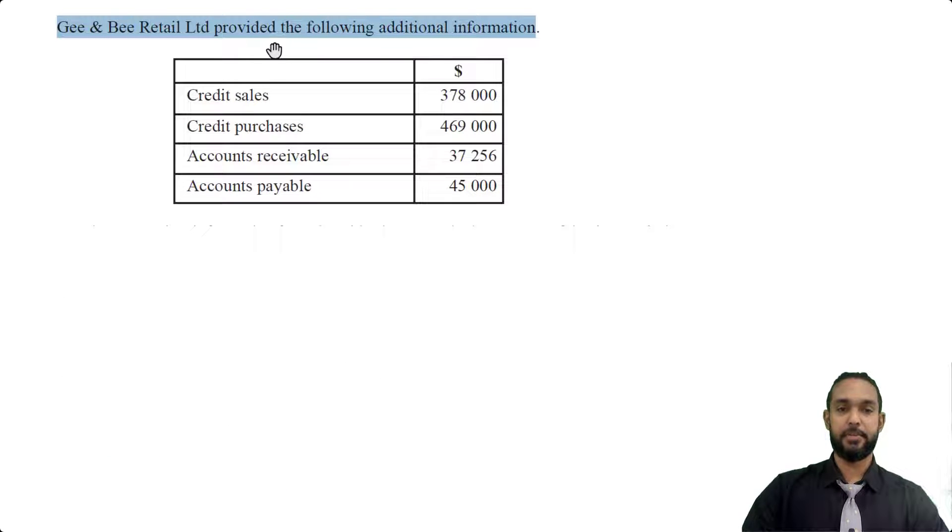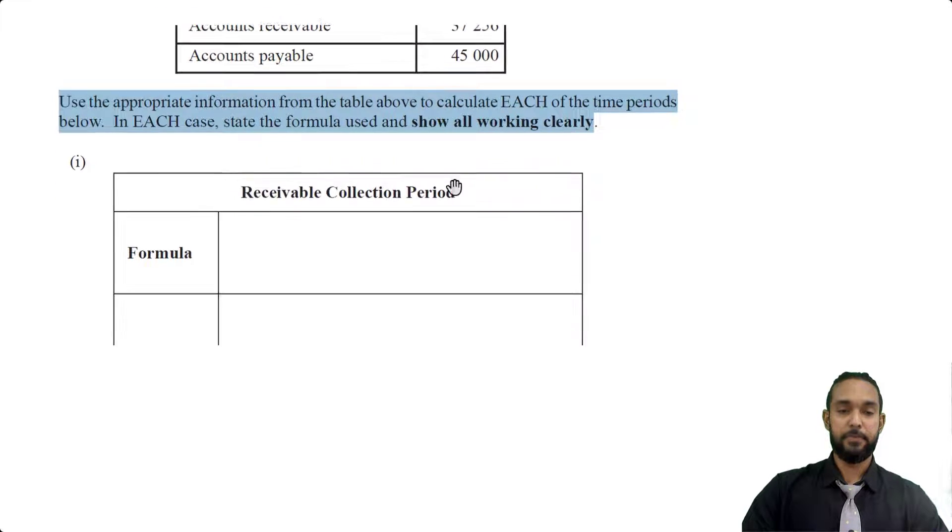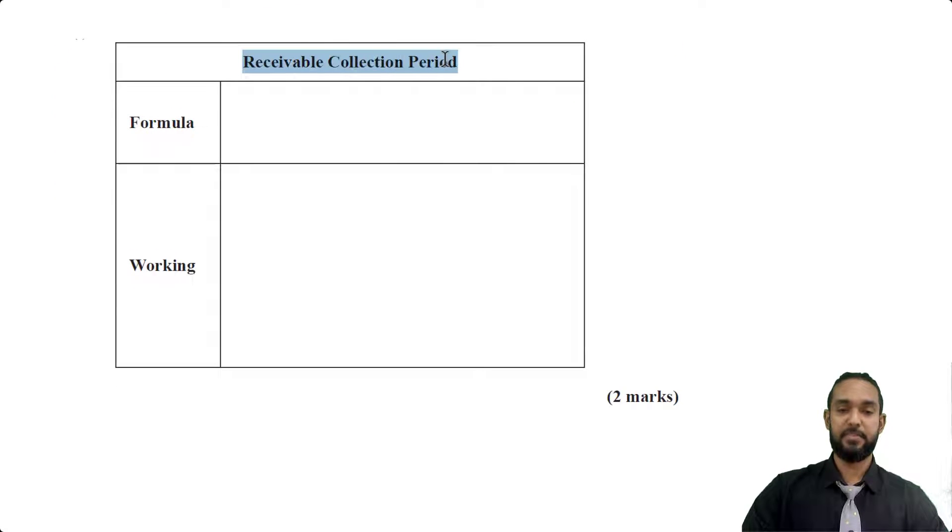So we're back with GNB Retail Limited, and they provided the following additional information. Credit sales, 378,000. Credit purchases, 469,000. Account receivable, 37,256. And accounts payable, 45,000. And again, use the appropriate information from the table above to calculate each of the time periods below. In each case, state the formula used and show all working clearly. The first item they want us to show is the receivables collection period. And of course, they want the formula and the working.